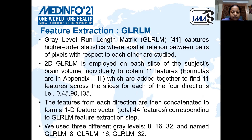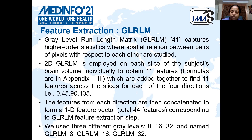The last method is GLRLM, or Gray-Level Run-Length Matrix. It captures higher-order statistics. We have applied it on each slice of the subject's brain and obtain 11 features, which are then averaged across the slices for each of the four directions. For all four directions, these features are concatenated to form a 1D vector. Here also, we have used three different gray levels: 8, 16, and 32.